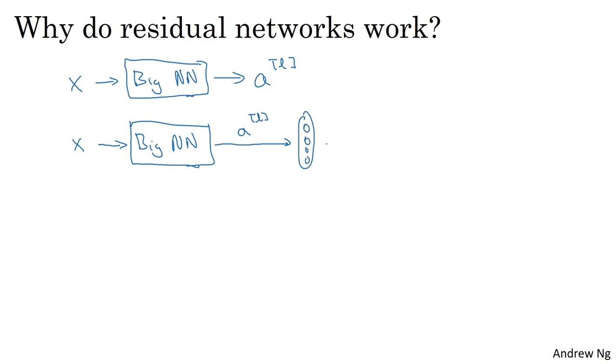So let's add one layer there and another layer there. And this will output AL plus two, only let's make this a ResNet block, a residual block with that extra shortcut.